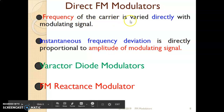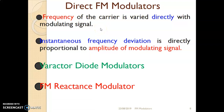When the frequency of the carrier signal is varied directly with the modulating signal, the instantaneous frequency deviation is directly proportional to the amplitude of the modulating signal. So whatever circuit we will see in this lecture, we have to keep track of this: instantaneous frequency deviation is directly proportional to the amplitude of the modulating signal.